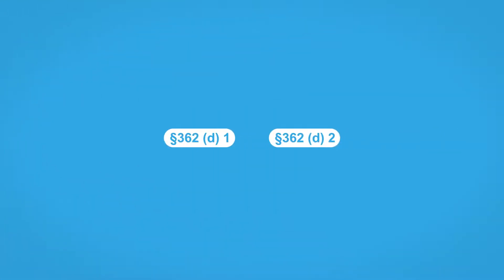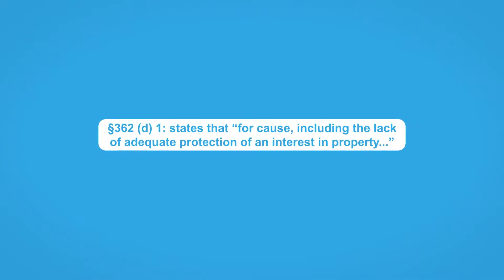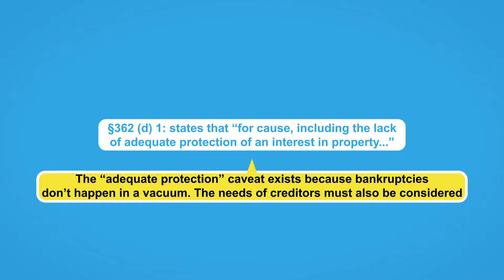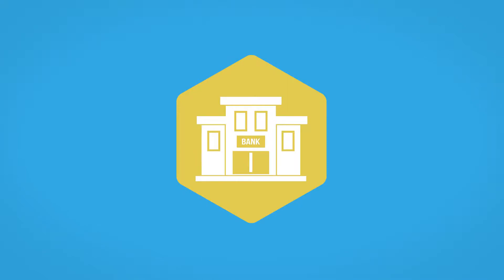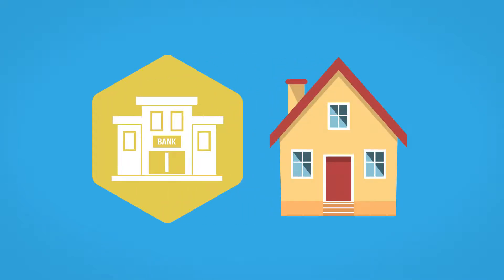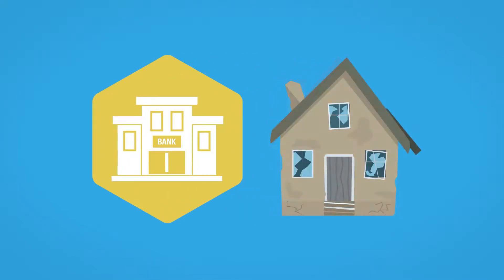The two most common methods for relief from the stay are found in Section 362(d)(1) and 362(d)(2). Section 362(d)(1) states that relief from the stay may be granted for a creditor for cause, including the lack of adequate protection of an interest in property. The adequate protection caveat exists because bankruptcies don't happen in a vacuum — the needs of creditors must also be considered. For example, if a bank has a lien on the debtor's home, the bank wants the debtor's home to preserve its value.